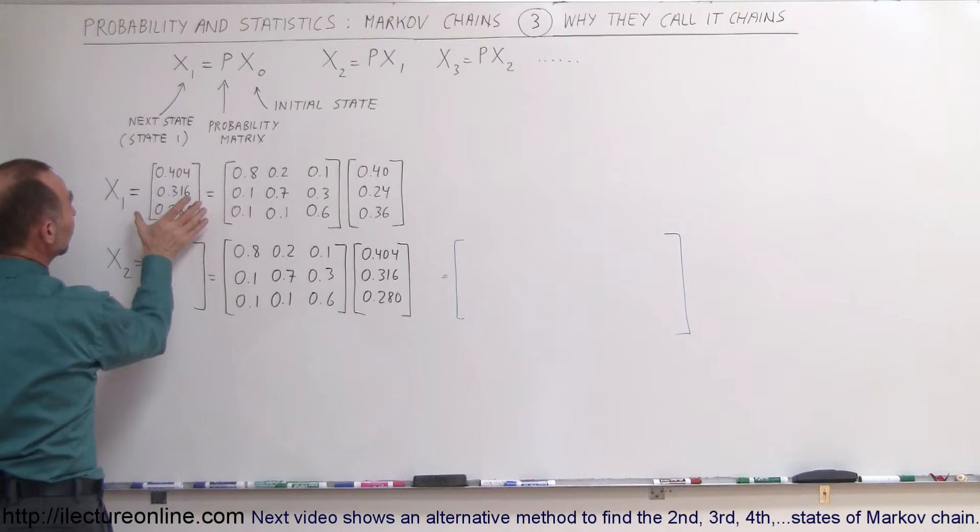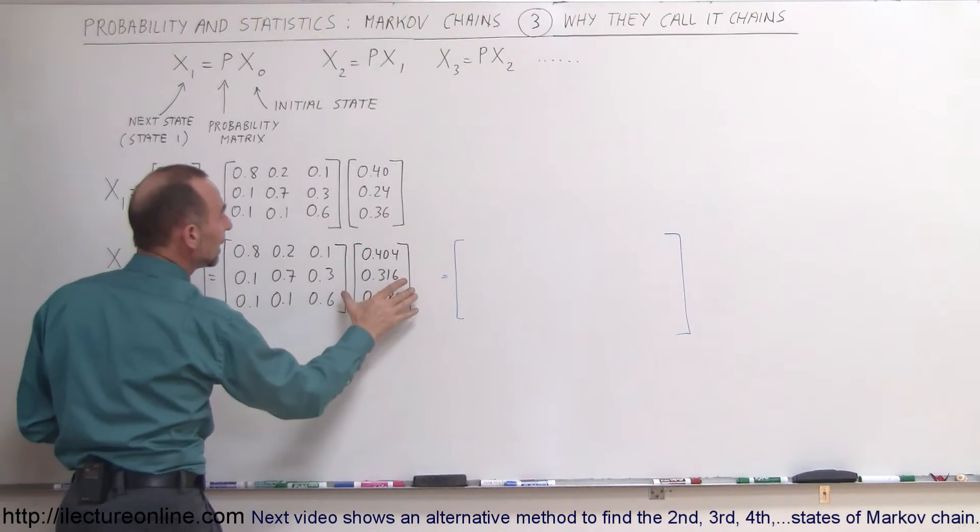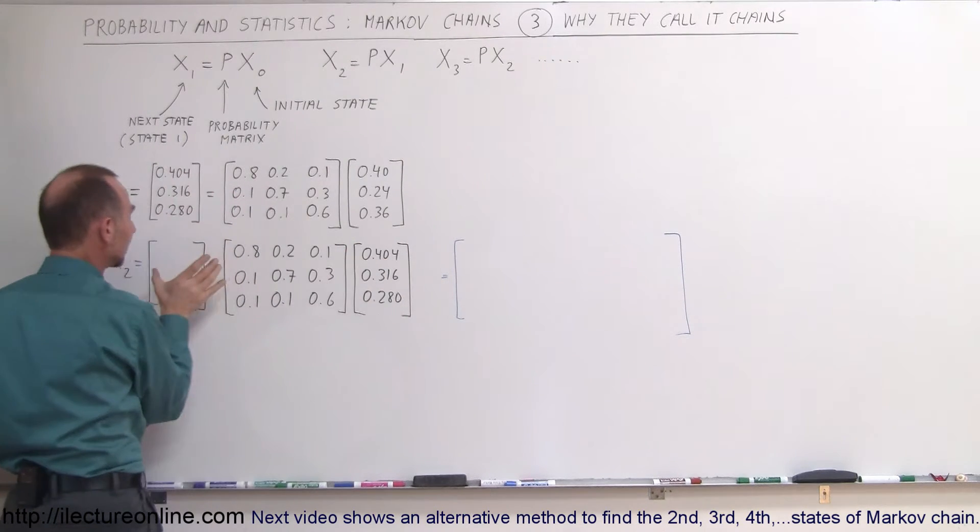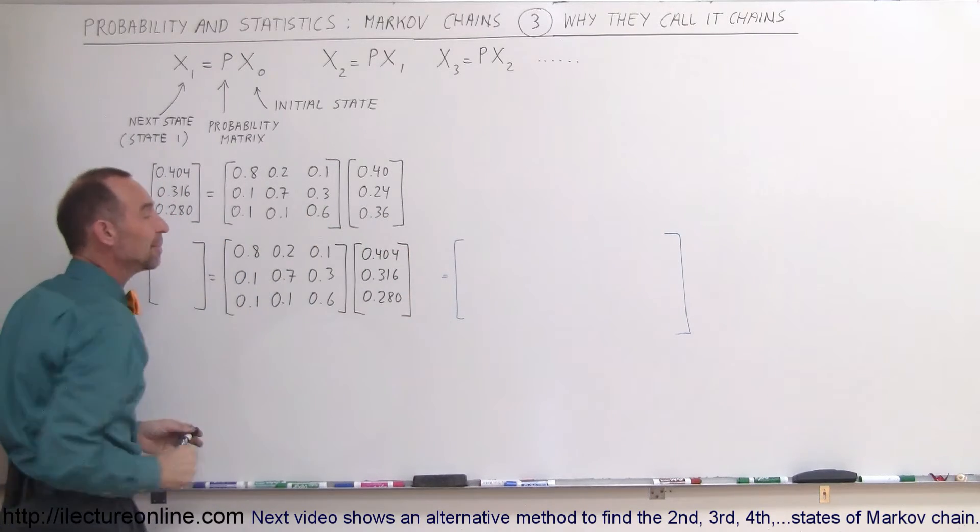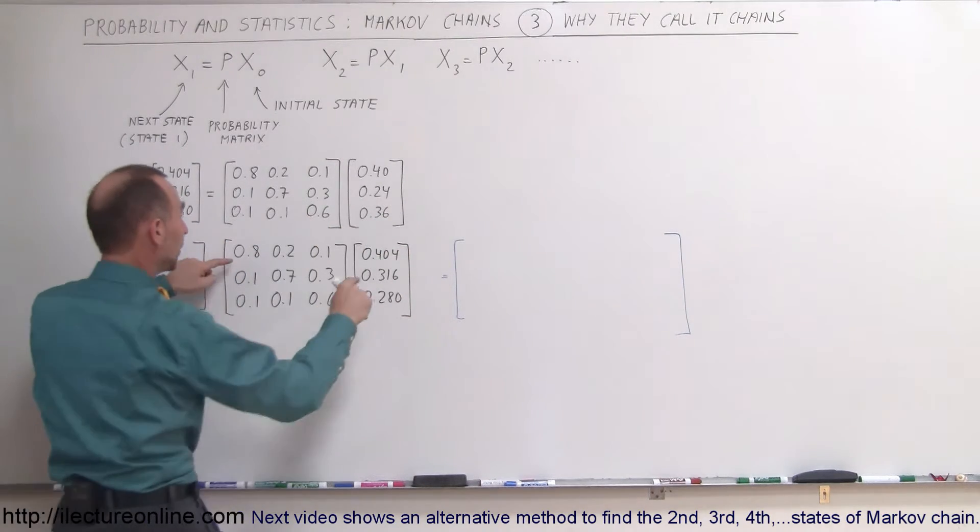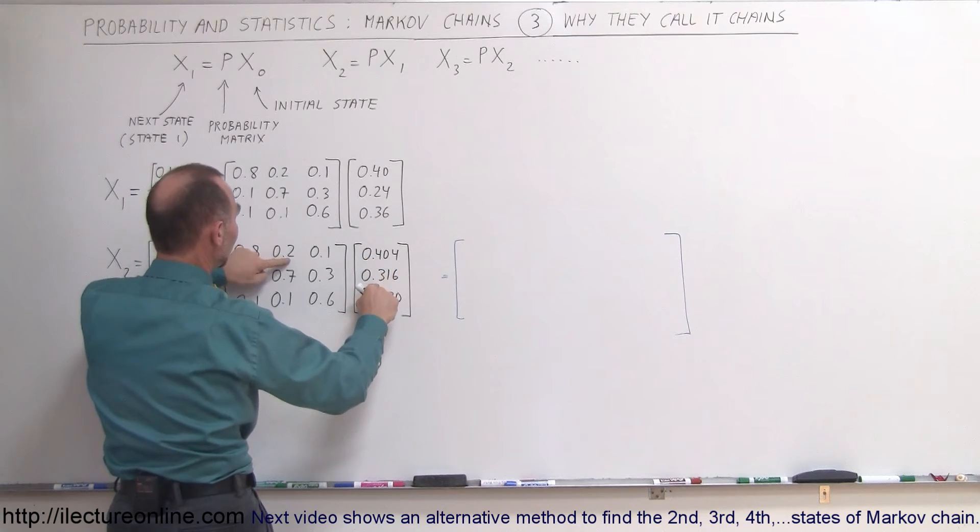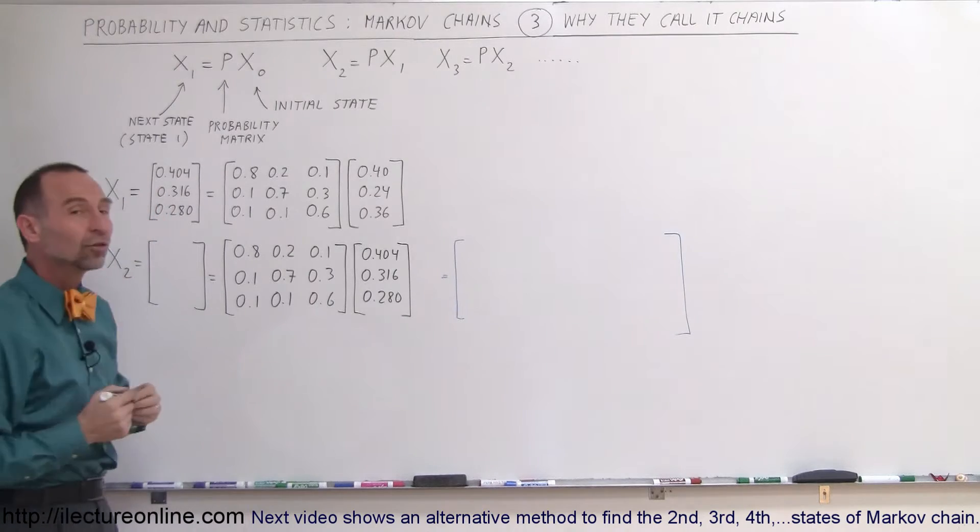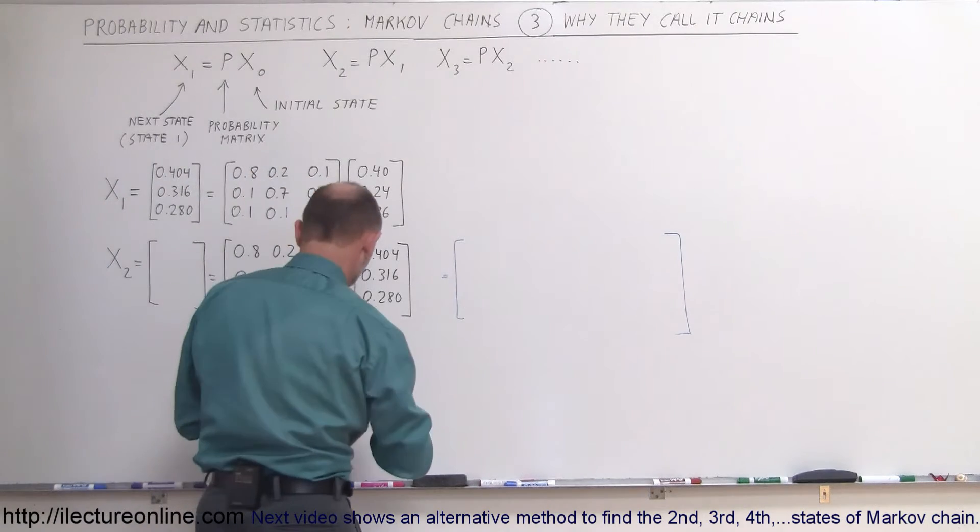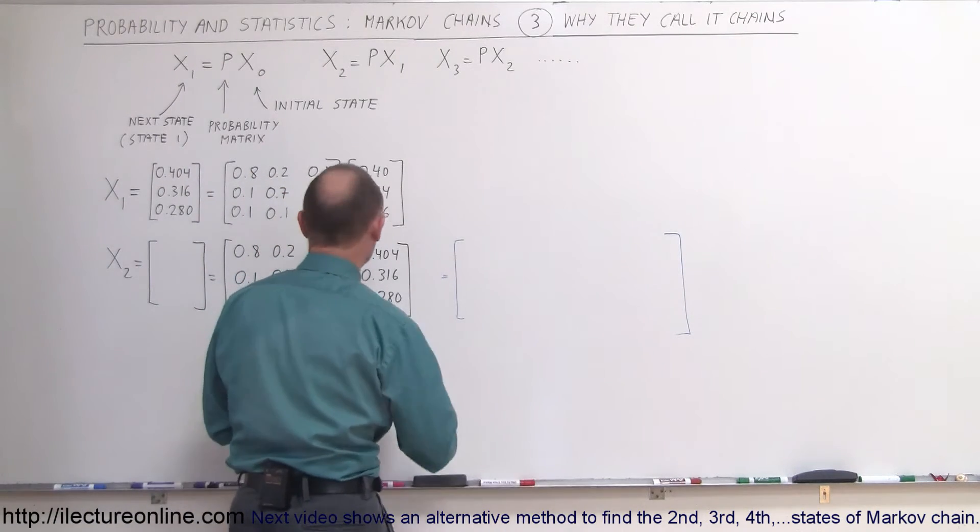What we do is we take state one and make that into the current state. Now we calculate state two by multiplying the probability matrix times this state matrix, which means we multiply this times this plus this times this plus this times this to come up with the new number of customers going to store A. Let me show you how that's calculated.